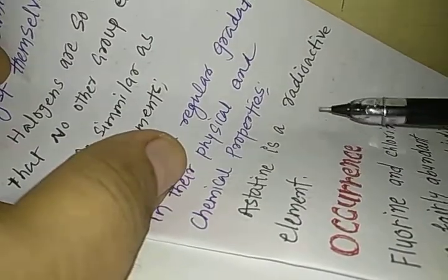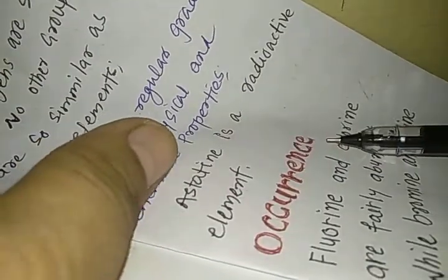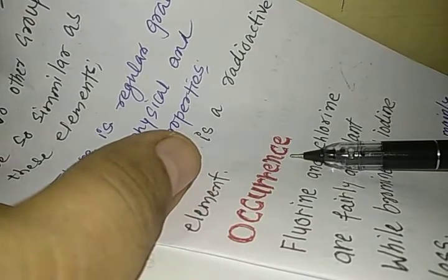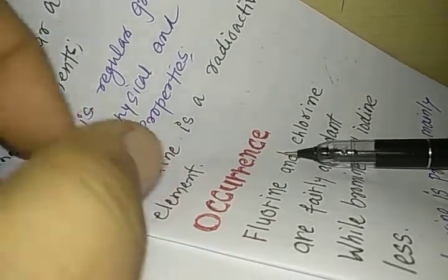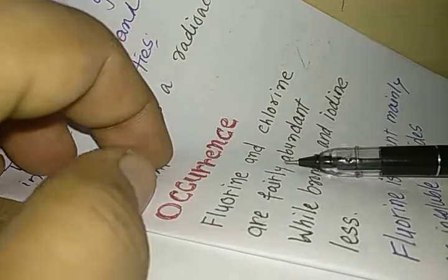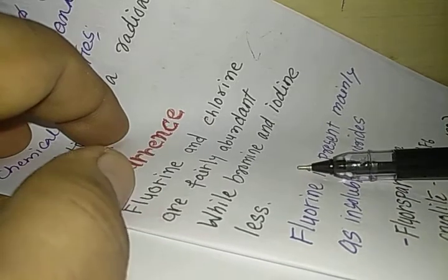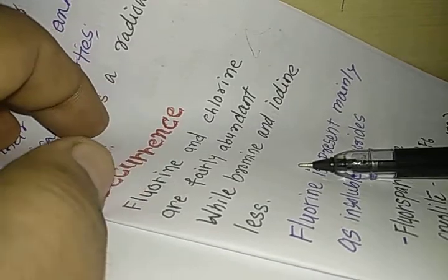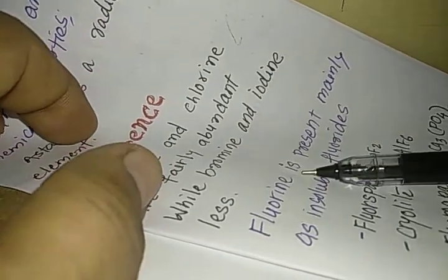Astatine is a radioactive element. Now we should understand their occurrence, how they occur in nature, how they are found in nature. Fluorine and chlorine are fairly abundant while bromine and iodine are less abundant. Less abundant means they are found comparatively in less quantity in the earth's crust or in the sea water.